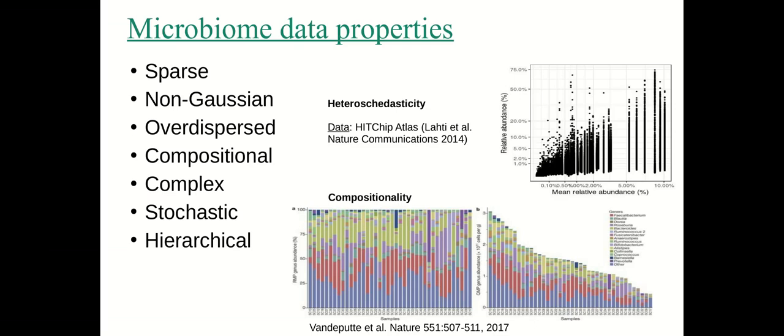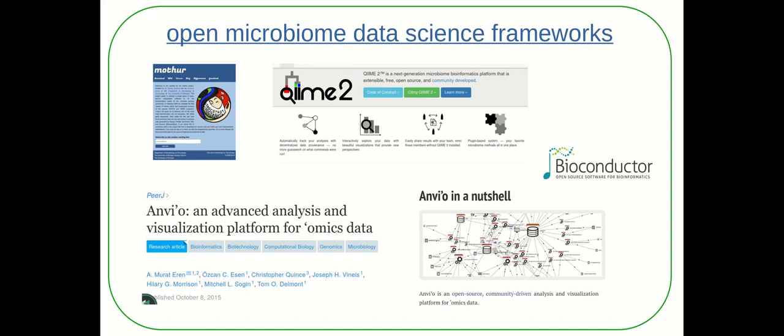Several different frameworks have been developed to do open microbiome data science that can take these specific properties into account and provide tools for many common study designs. Some of them are more focused on the low-level analysis of the metagenomic sequencing data. Others provide tools for downstream analysis of the microbial community data and data integration like MOTAR and QIIME2. Today we are talking mostly about the Bioconductor ecosystem which is one open source software ecosystem for bioinformatics and particularly focusing on the R language.